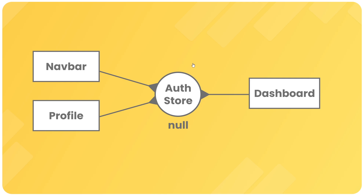This approach of having a store to hold global state that multiple components use makes more sense than defining it directly in components and passing it down as props, because it's much less work this way, less complex and verbose, and also promotes a separation of concerns in your application, keeping your global state separate from your components.